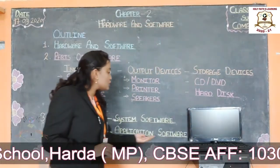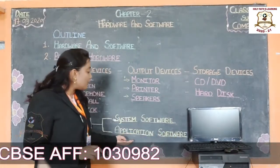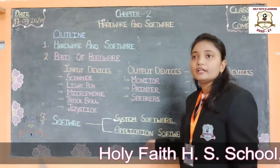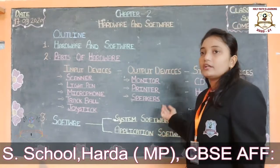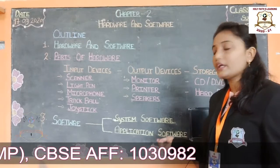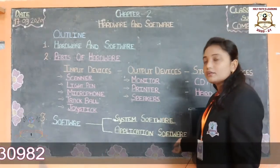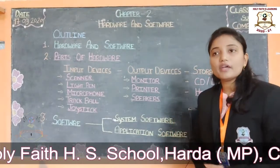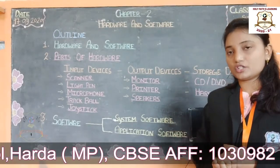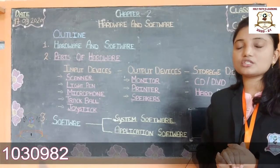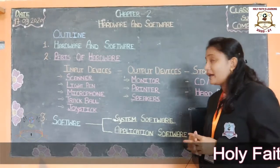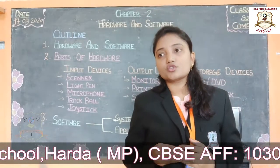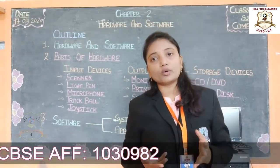Next one is the application software. The software that does a specific type of work is called application software. There are different types: MS Paint is used for drawing and coloring. MS Word is used for typing applications, letters, stories, etc. Calculator is used for doing calculations.